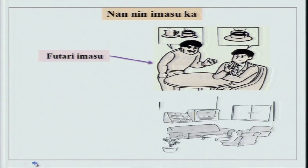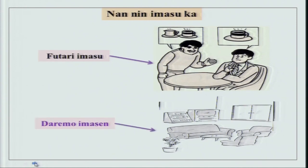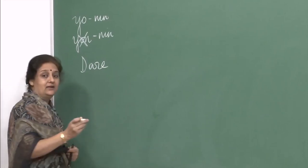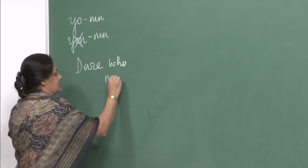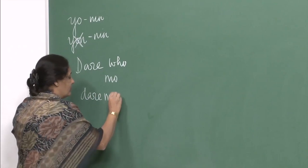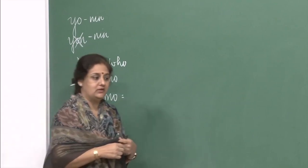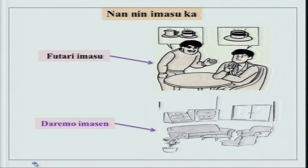But when you look at a picture with no one in it, what should the answer be? Nan nin imasu ka? It could be zero nin imasu, but that is not used at all. There is a better way of saying it: dare mo imasen. The question word dare means 'who', and if you add mo to it, dare mo equals 'no one' or 'nobody'. So: nan nin imasu ka? Dare mo imasen. Nobody is present.